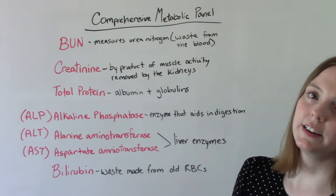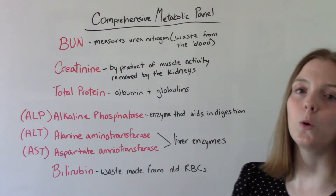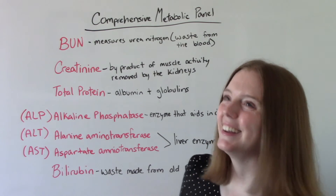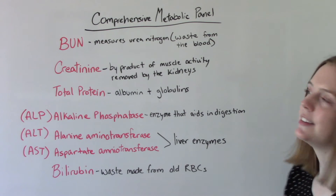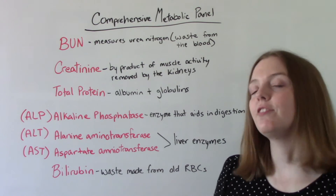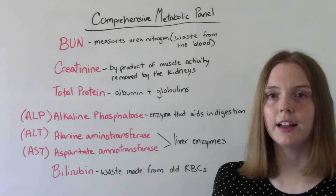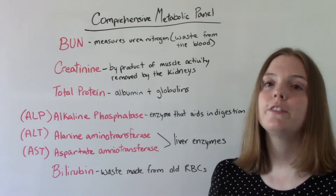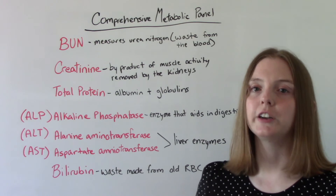The total protein is the sum of albumin plus the globulins. Your ALP, ALT, and AST are all liver enzymes. ALP is an enzyme that aids in digestion and helps protect the normal bacteria in your gut. If ALT and AST are elevated, that can show signs of liver damage. Bilirubin is another waste product, formed after old red blood cells have been broken down by the liver. Very high levels of bilirubin are also indicative of a potential liver problem, and a patient with high bilirubin will present with jaundice.